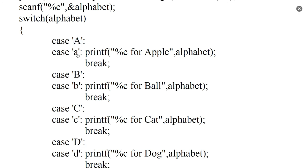The possible alphabet values are capital A, small letter A, capital B, small letter B, capital C, small letter C, capital D, and small letter D. In the case of small letter A or capital A — when the alphabet is A — print A for Apple, using percentage C placeholder replaced with the alphabet.